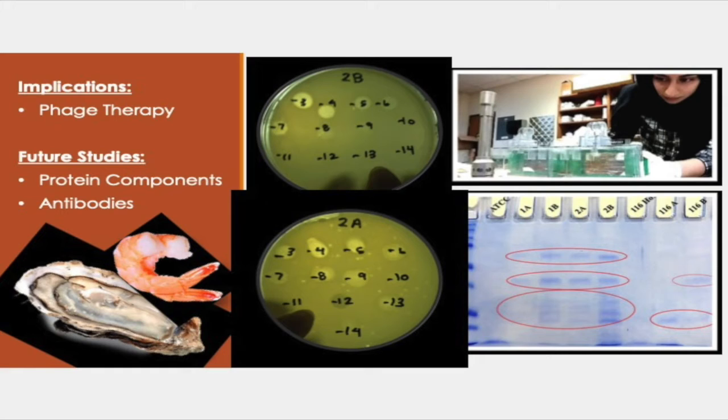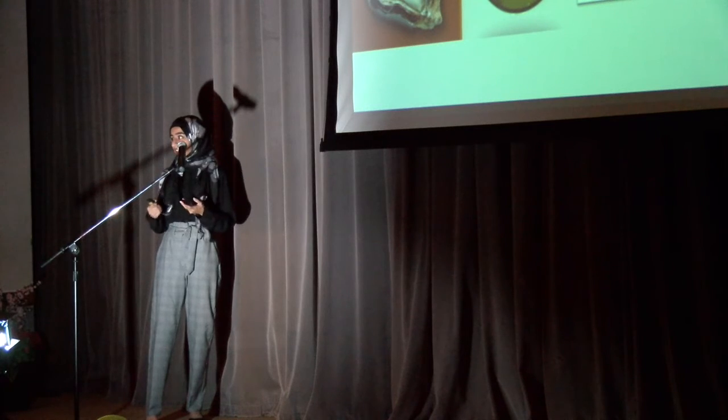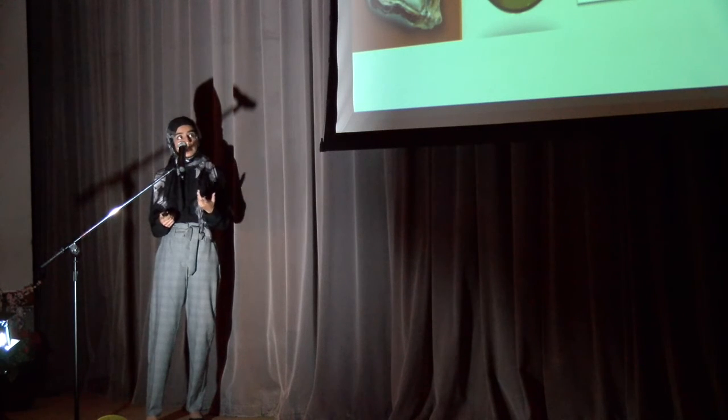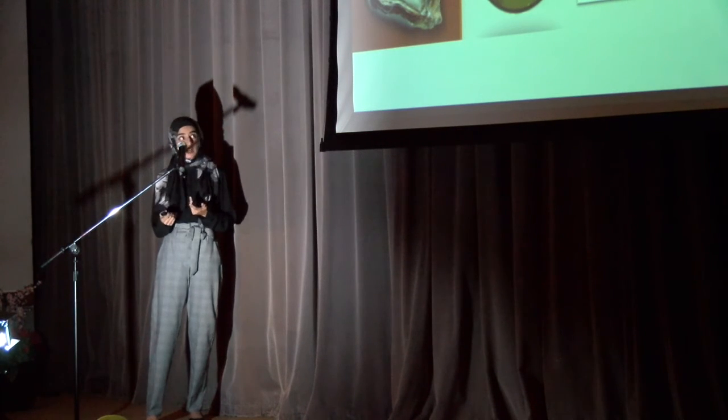There's a bacteria called Vibrio Parahemolyticus which is attacking oysters, and this causes your basic gastrointestinal issues: vomiting, diarrhea, stomach pains. One way to deal with this is to use this good guy, phage, and try to get rid of this bacteria.